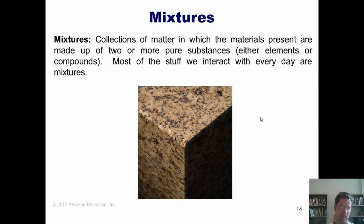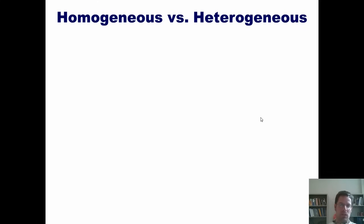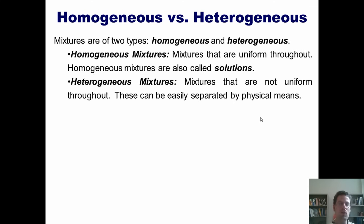Mixtures can be one of two types, either homogeneous or heterogeneous. Homogeneous mixtures are mixtures that are uniform throughout. In other words, the various things in them have all been uniformly dispersed or spread out perfectly evenly. Homogeneous mixtures are also sometimes called solutions. Now, heterogeneous mixtures are mixtures that are not uniform throughout. So the individual things in them are not evenly spread out or evenly dispersed throughout the mixture. Heterogeneous mixtures can be easily separated, or the components of heterogeneous mixtures can often be easily separated by physical means.